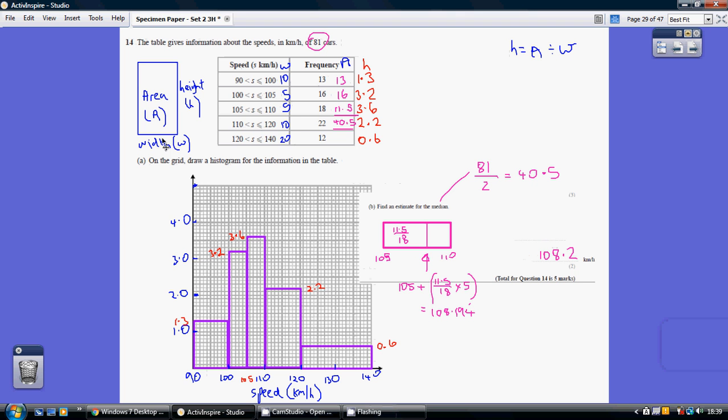Now obviously width times height or base times height is the area, so area divided by width, area divided by base equals the height. So if we take these areas here and we divide by the bases here, we get these heights here for our rectangles.